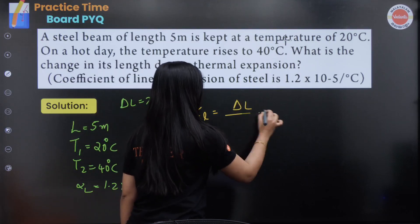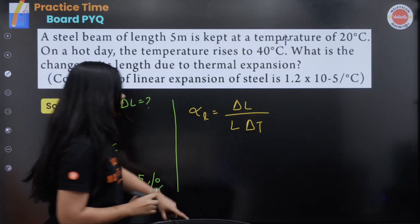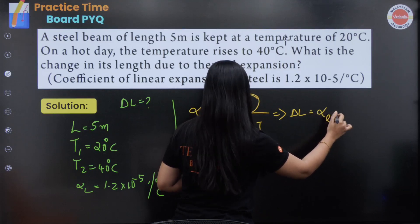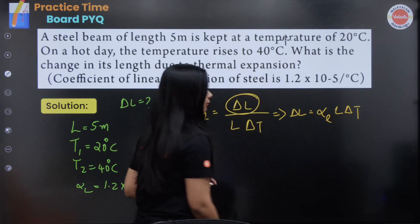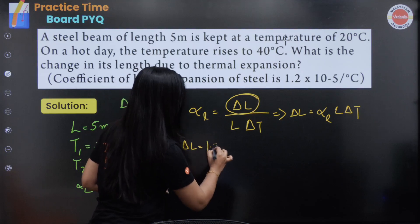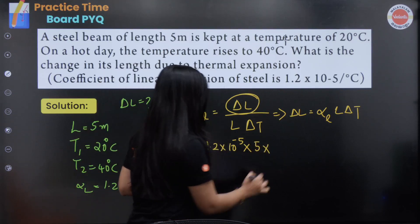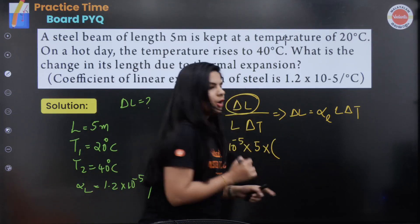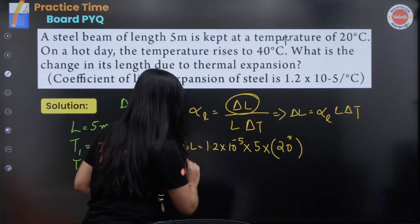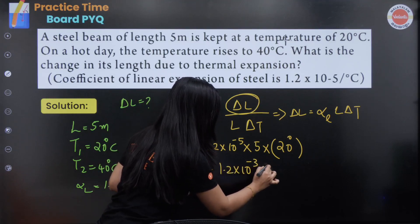The coefficient of linear expansion alpha is equal to change in length divided by original length into change in temperature. So, delta L is equal to alpha L into L into delta T. That is 1.2 into 10 to the power minus 5, into original length 5 meter, into change in temperature, which is 40 minus 20 degrees Celsius, giving 20 degrees Celsius. So, the change in length is 1.2 into 10 to the power minus 3 meter.